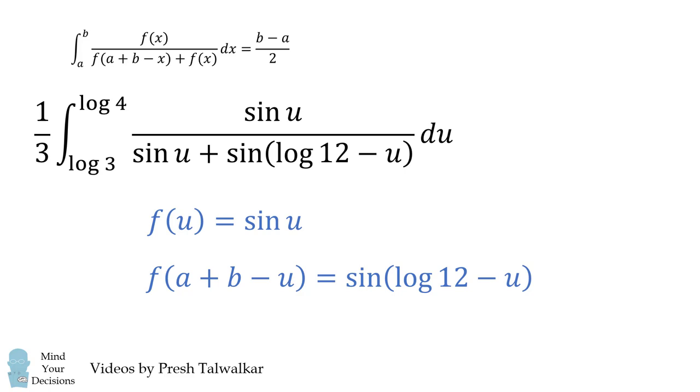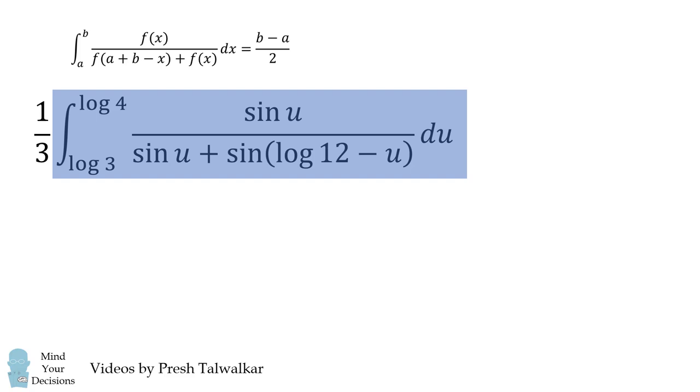The integral therefore exactly fits our formula. We can evaluate the integral part using b minus a over 2. So the integral will be log of 4 minus log of 3 all over 2, which simplifies to be log of 4 over 3 all over 2.